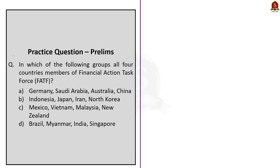Question 2: In which of the following groups are all four countries members of the Financial Action Task Force? Out of the four options, option D is eliminated because it contains North Korea, and option B is eliminated because it contains Myanmar, which was recently added to the FATF blacklist. We are left with options A and C. Option A contains Germany, Saudi Arabia, Australia, and China, which are all FATF members. The correct option is option A.